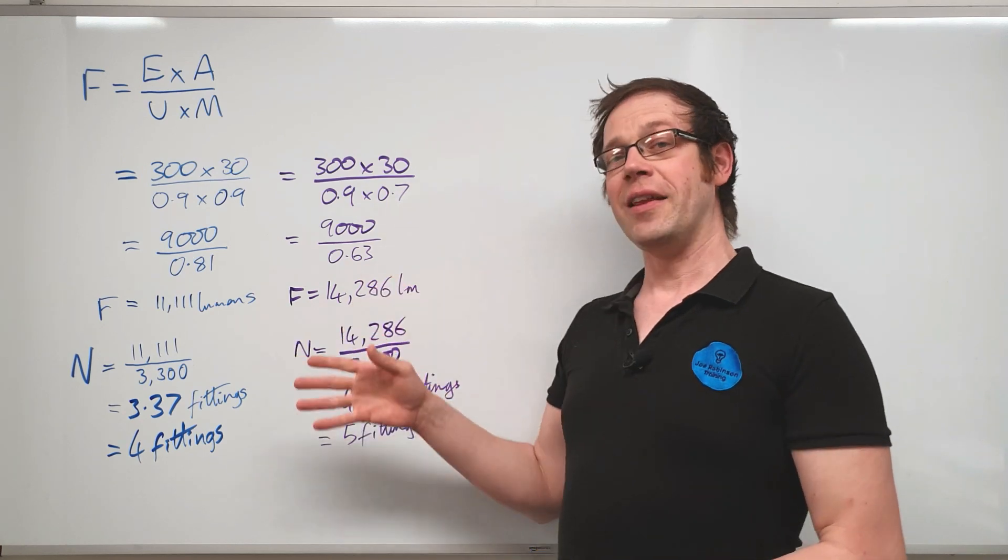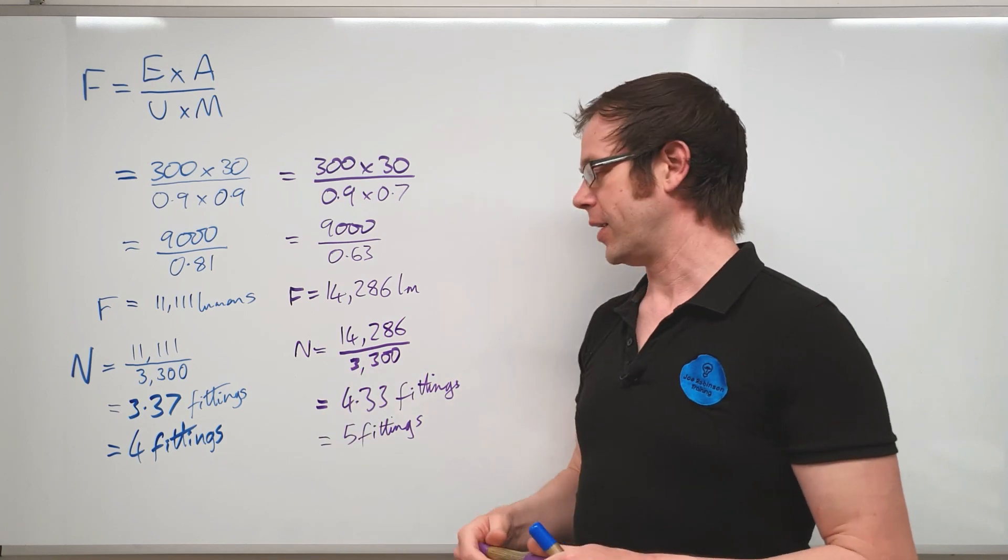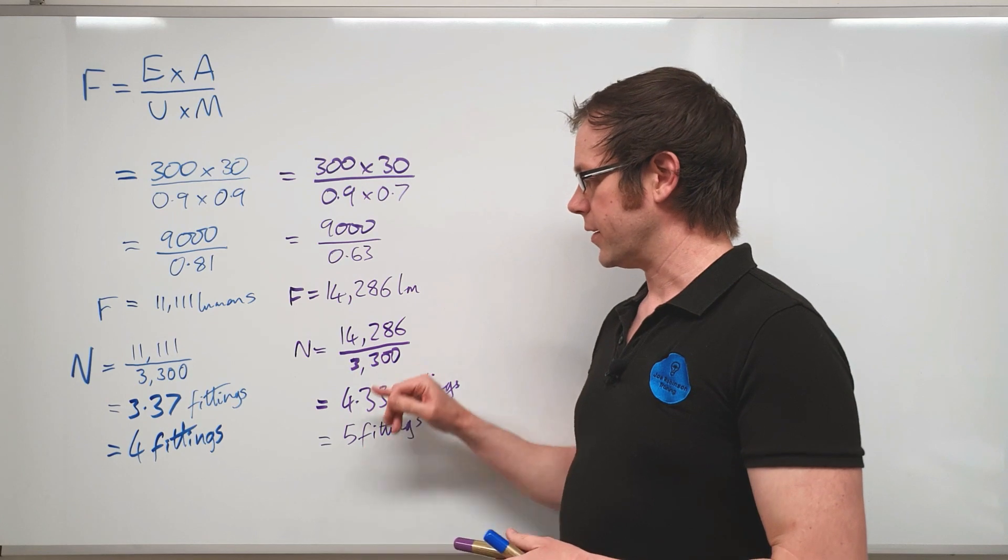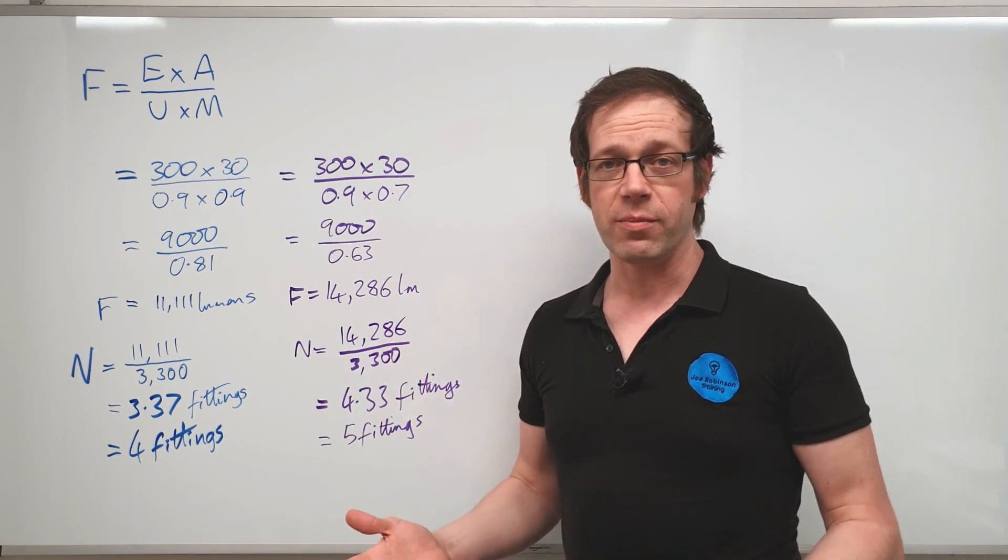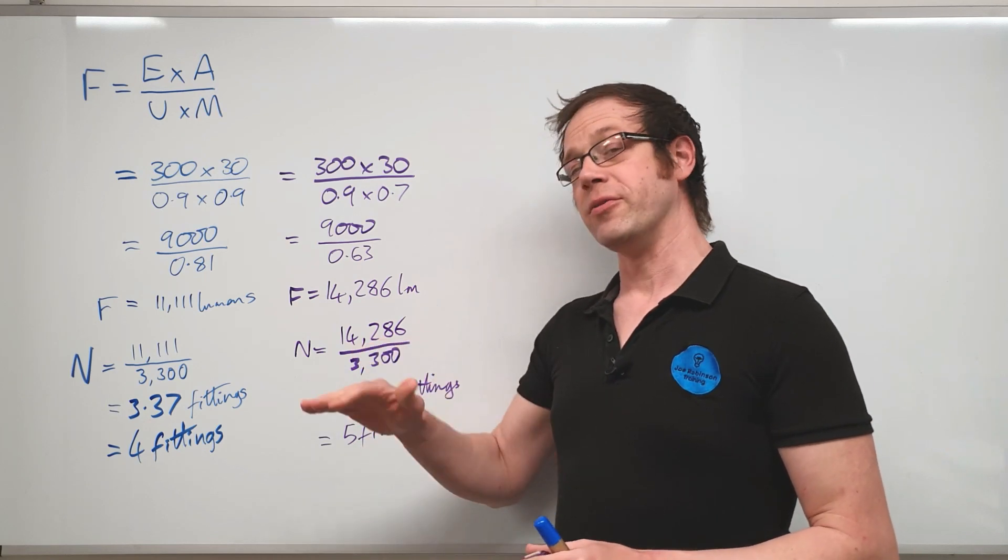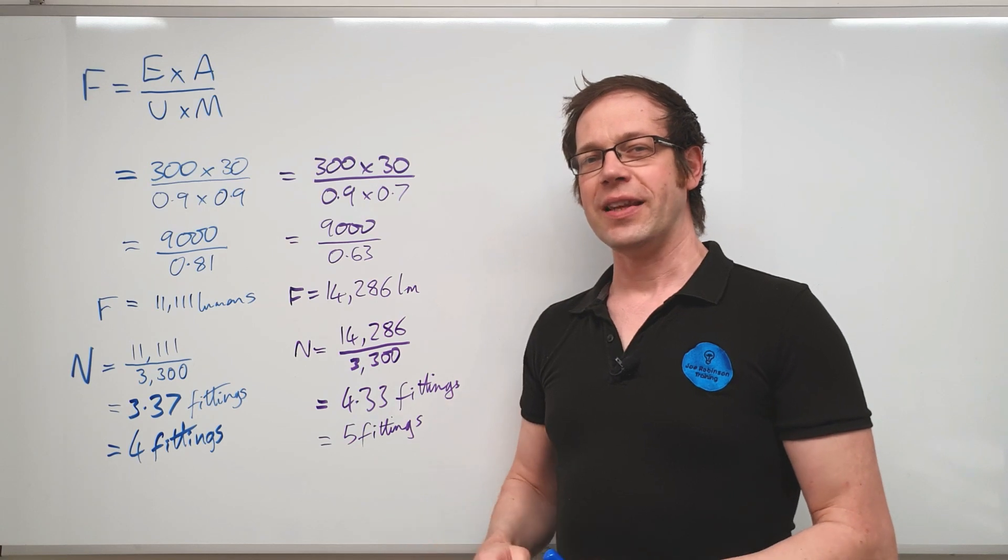So you can see the challenge that we're up against already as lighting designers when we start doing these calculations. As electricians there's a number of ways around it. You might go to six fittings and install dimming technology, that could be a requirement of the installation anyway in order to bring the illuminance down to the right level. However it's quite a knotty problem for us to deal with and it's a little bit beyond the scope of this video.